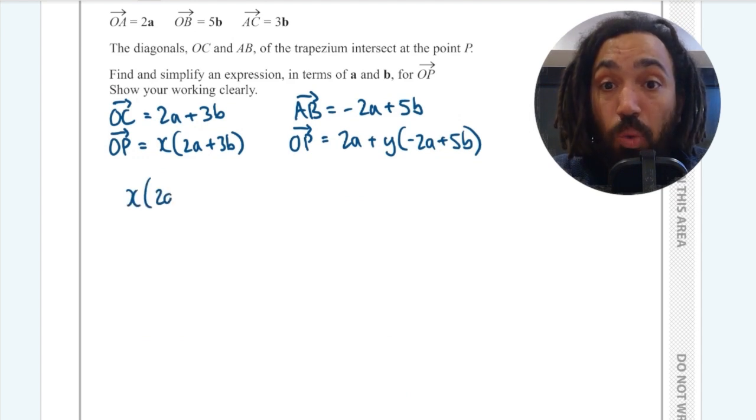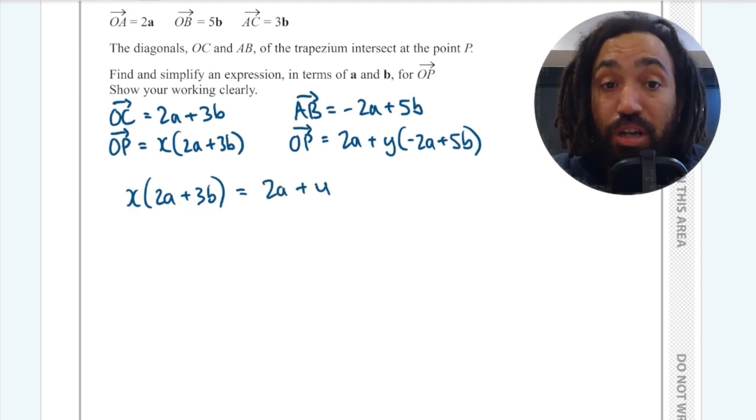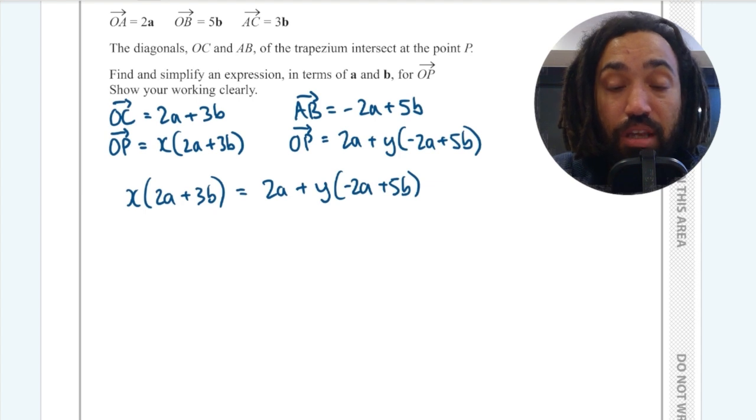So that's what I'm going to do now. I'm going to write X multiplied by 2A plus 3B and that equals 2A plus Y lots of minus 2A plus 5B. The next thing I'm going to do is expand these brackets because I want to create a collection of A's and B's on both sides which I can then equate.